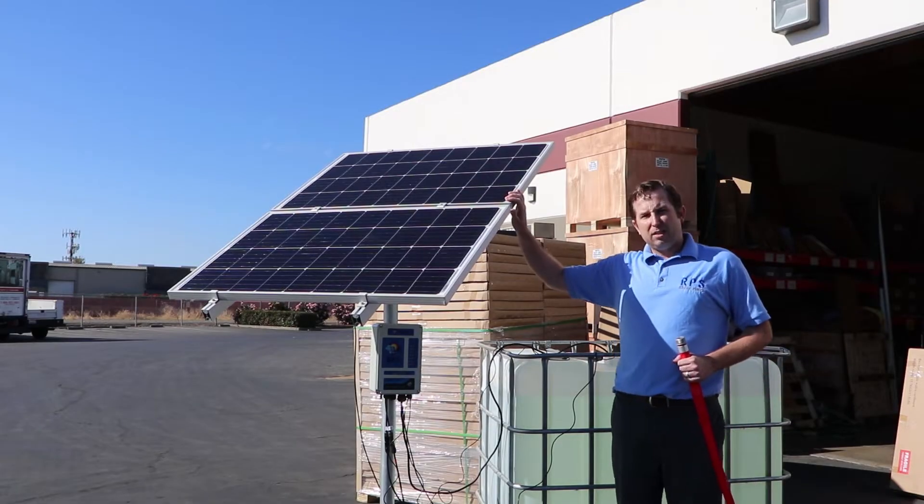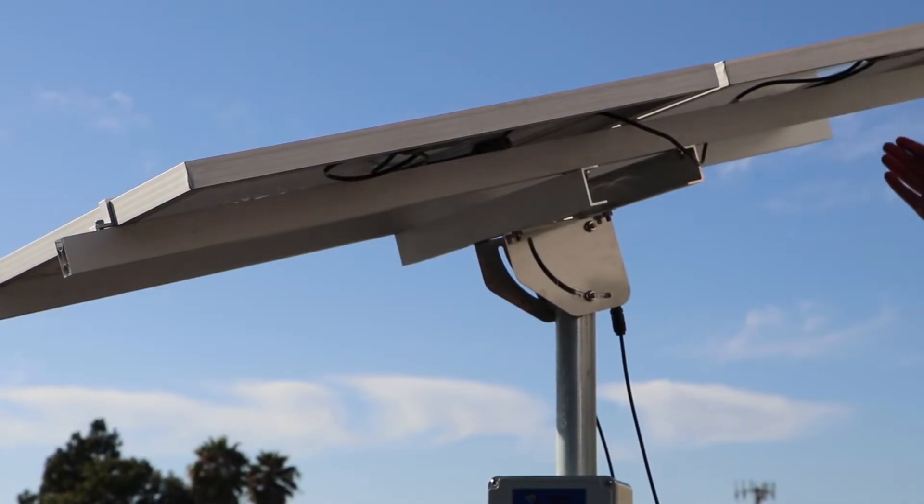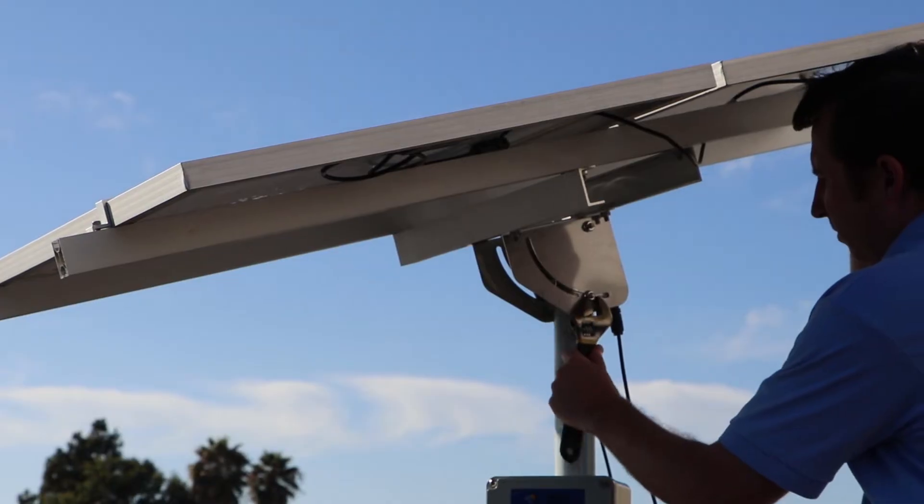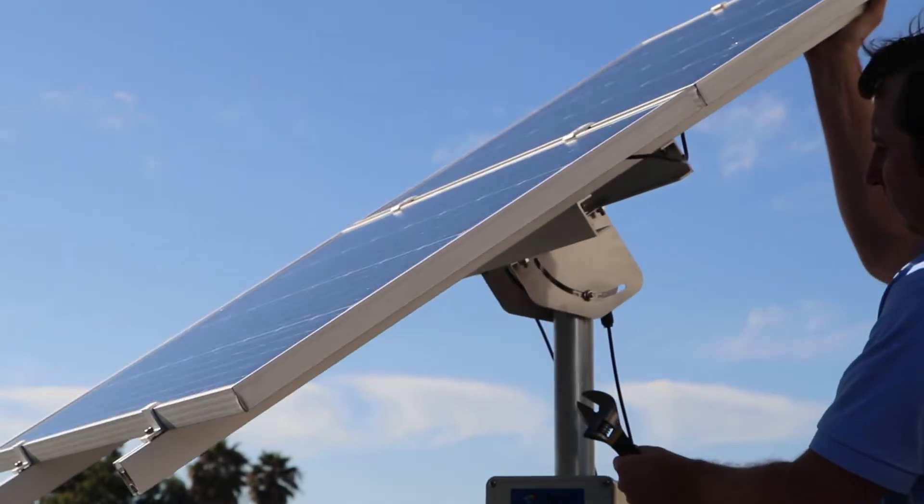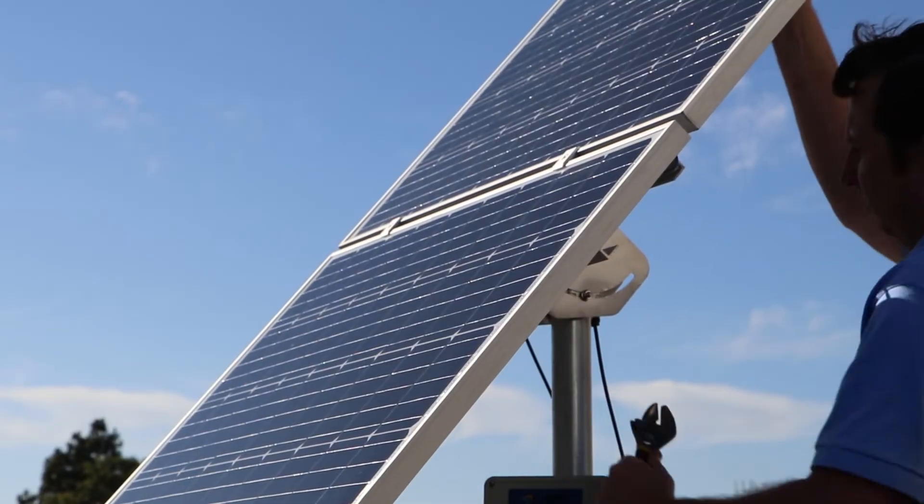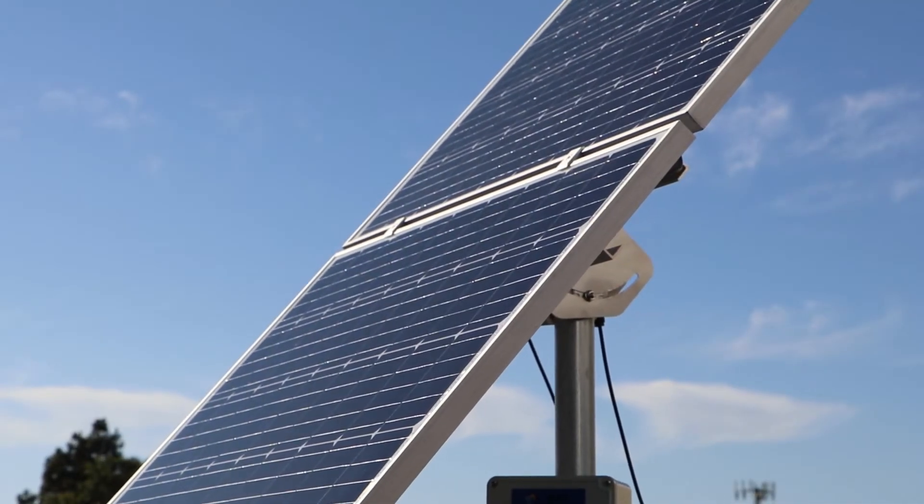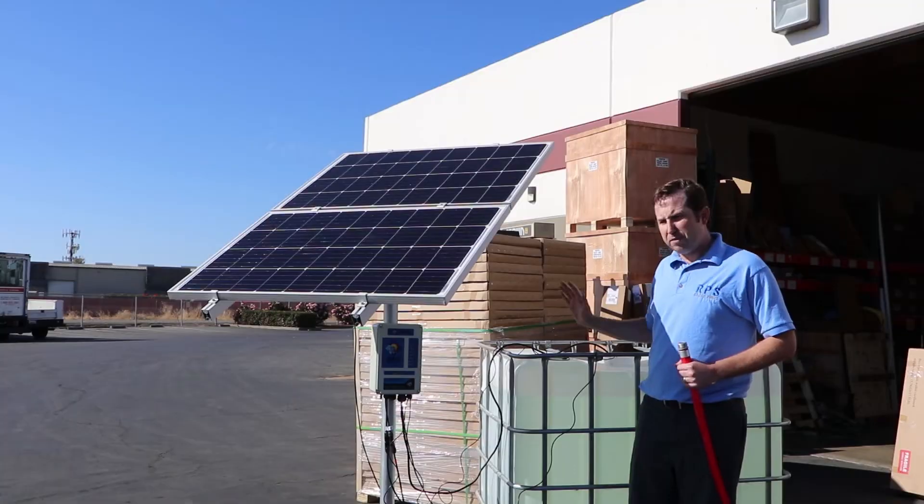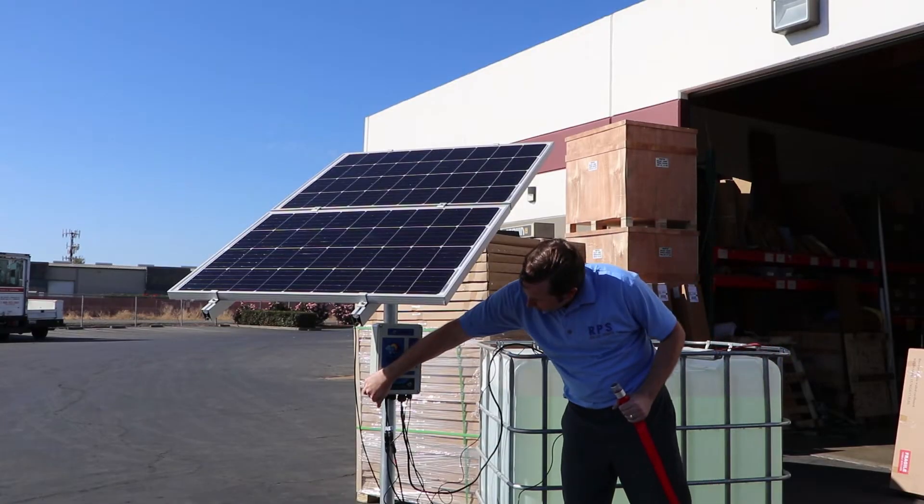We set our panels up on our two panel adjustable tilt mount solar mount. This is an optional accessory with your kit and it'll make the installation go much easier, plus it's adjustable throughout the year so you can change the angle of the solar panels for an appropriate season.